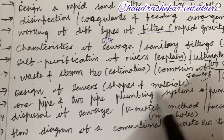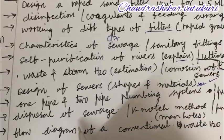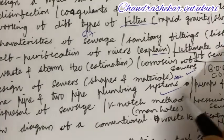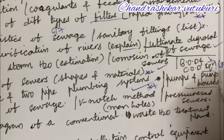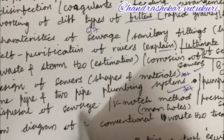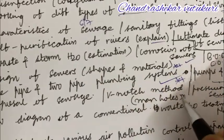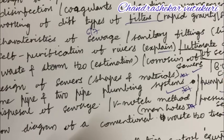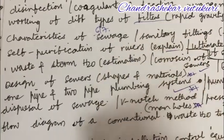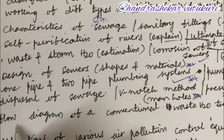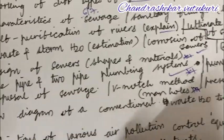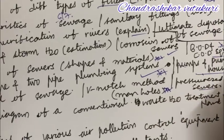Design of sewers — the shapes and materials — is one of the gunshot questions. One pipe and two pipe plumbing system is also a very important and gunshot question. Pumps and pump houses is a short question. Pressurized sewers is a short question. Disposal of sewage, the V-notch method, and manholes are said to be the very topmost and gunshot questions for Unit 3, question numbers 6 and 7. Explaining the flow diagram of a conventional wastewater treatment plant is one important question which may occur this time.